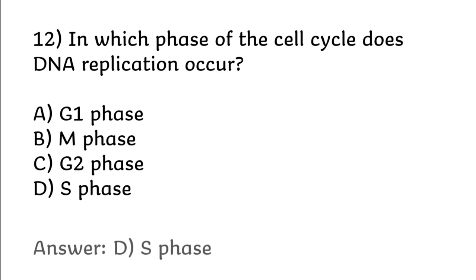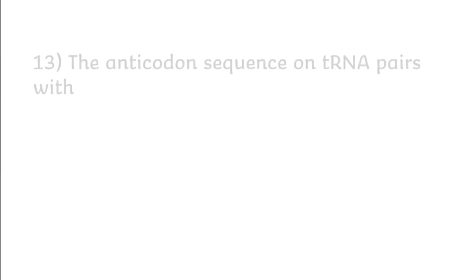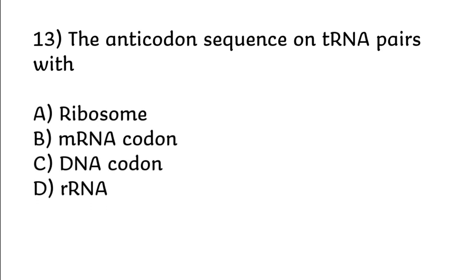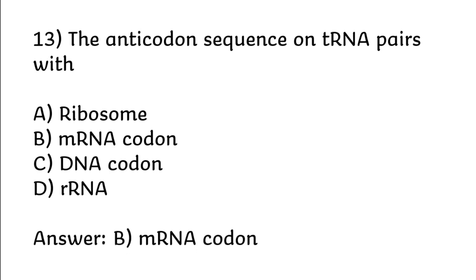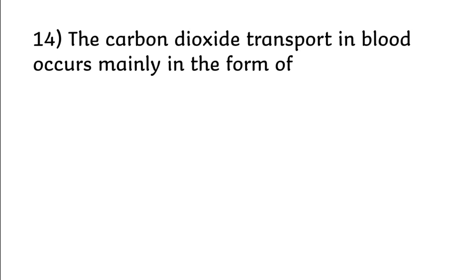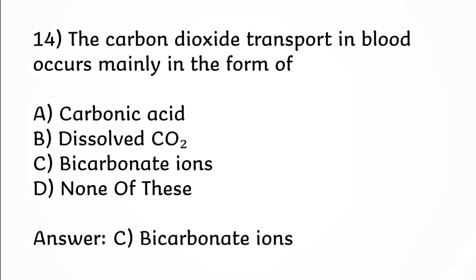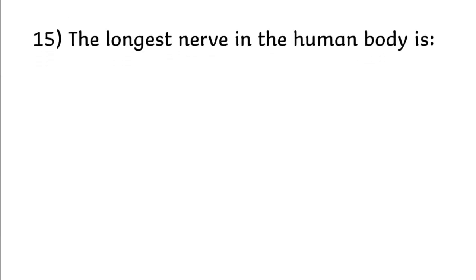Correct answer is option D: S phase. The anticodon sequence on tRNA pairs with: ribosome, mRNA codon, DNA codon, rRNA. Correct answer is option B: mRNA codon. Carbon dioxide transport in blood occurs mainly in the form of: carbonic acid, dissolved CO2, bicarbonate ions, none of these.